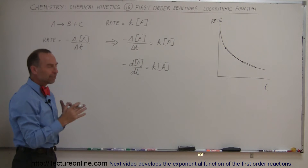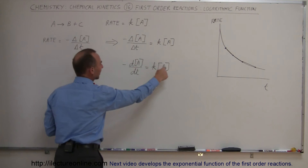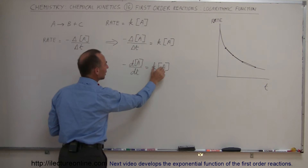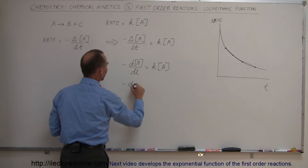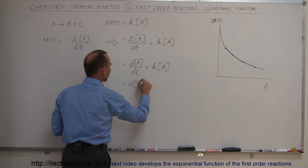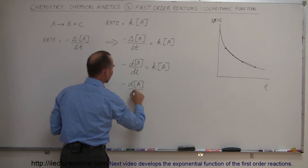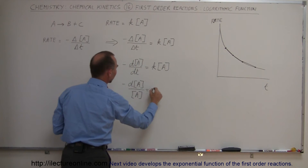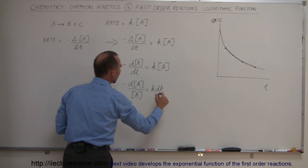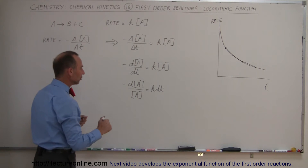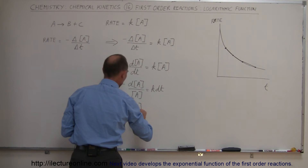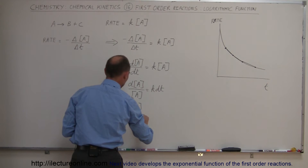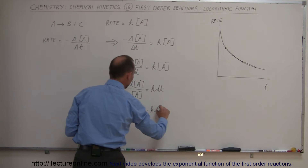Now we combine the variables. We have [A] on both sides and T on one side. Moving T across and [A] to the denominator, we get: minus d[A] divided by [A] equals K times dt. Moving the negative sign to the right side gives us: d[A] divided by [A] equals negative K times dt.